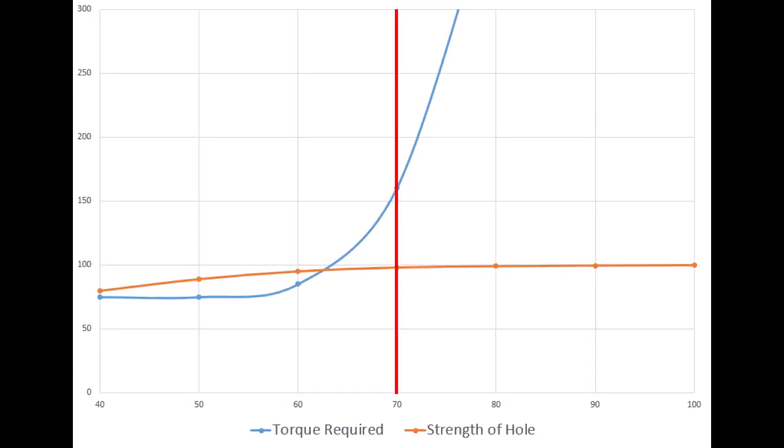In tapping, the thread engagement also indicates the work required to create the thread. High thread engagements require much more power. Their percentage of engagement is based on the drill size selection. The larger the drill, the smaller the engagement.